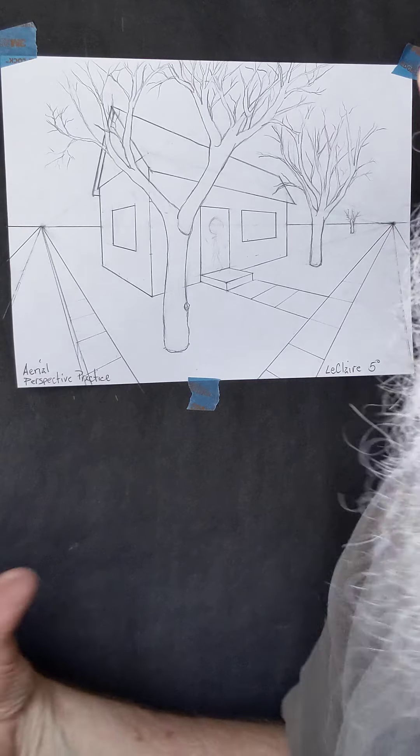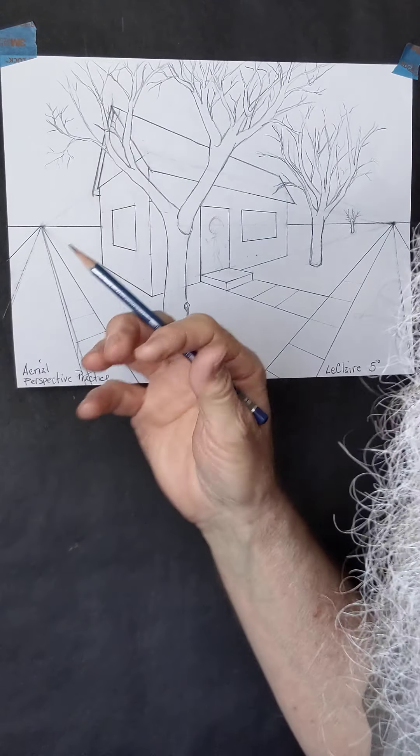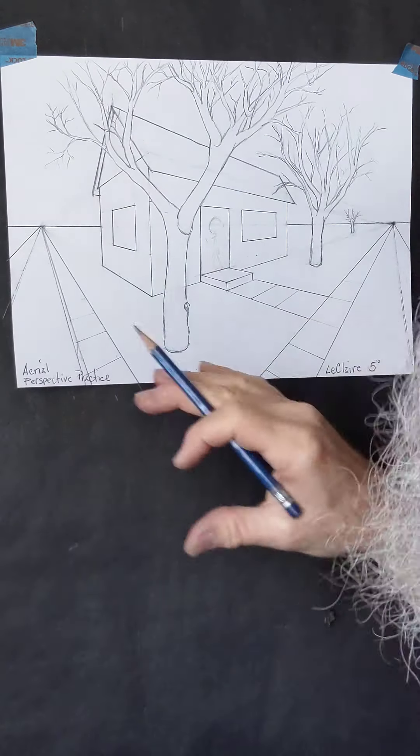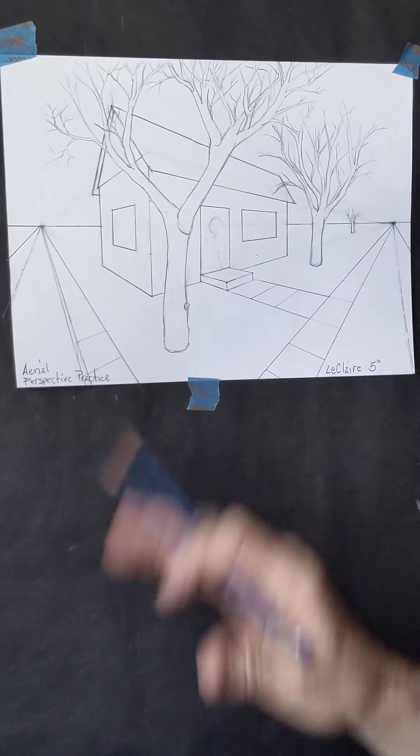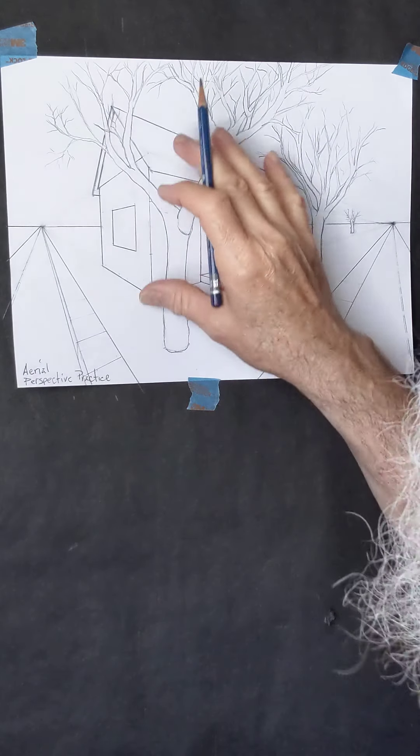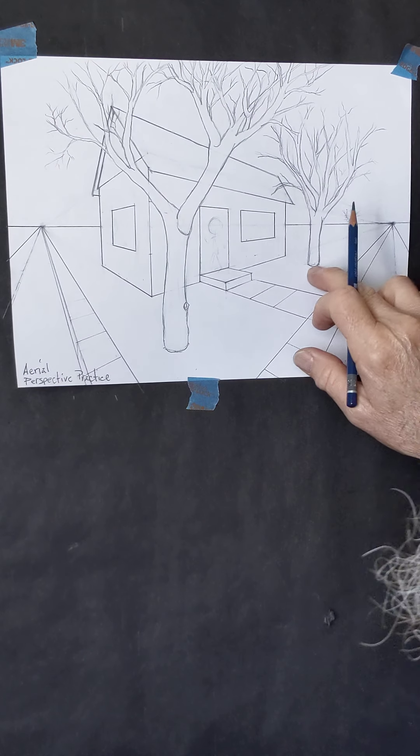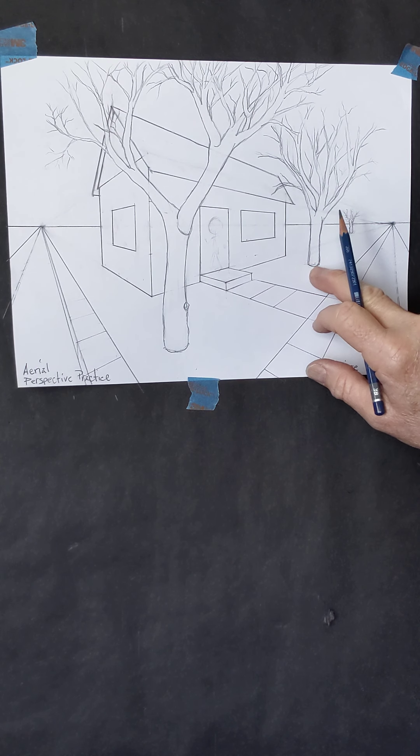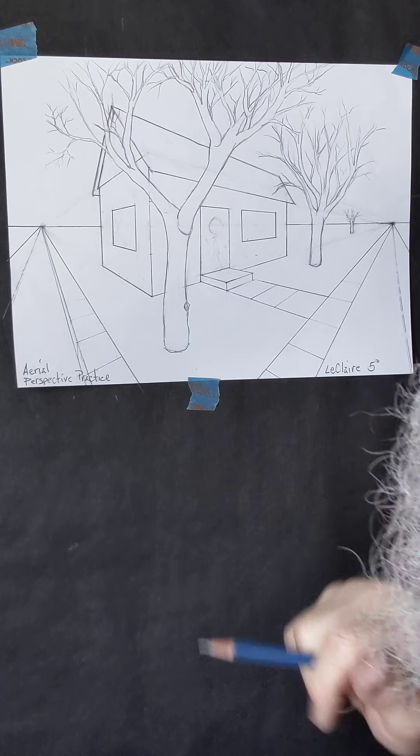Yours don't have to be nearly as involved as mine. They don't have to be as big or as branched out as mine, but get the essence of a tree existing in the foreground and one in the middle ground. That's one of the requirements for this practice work.